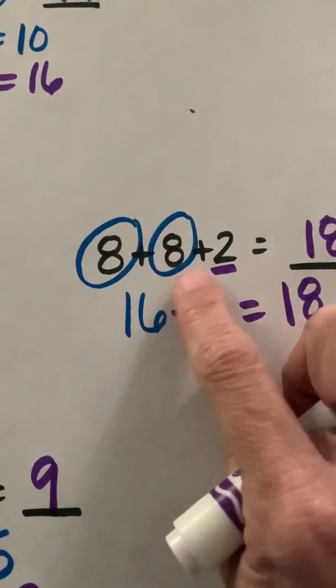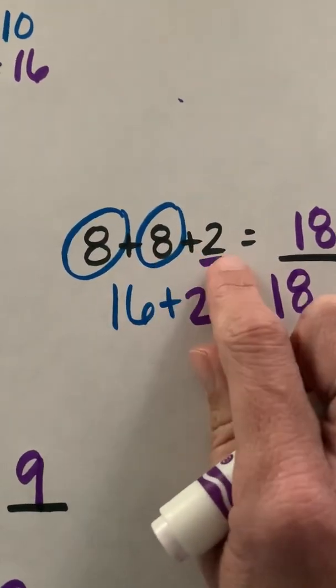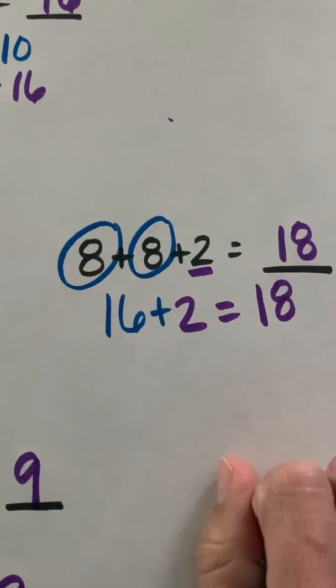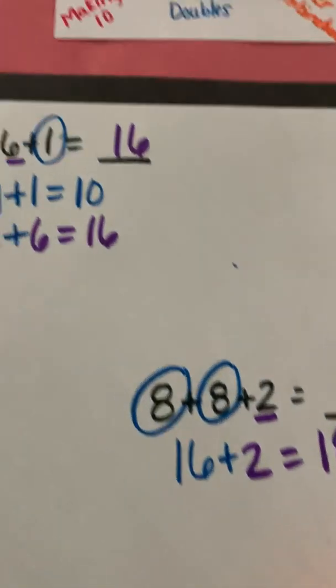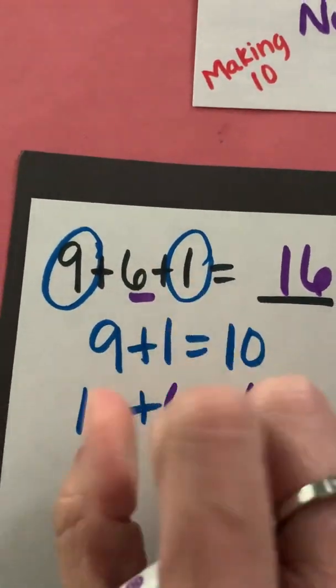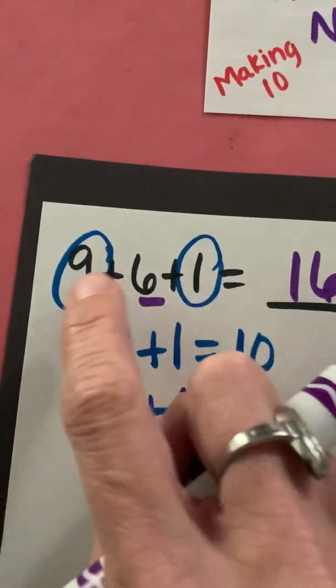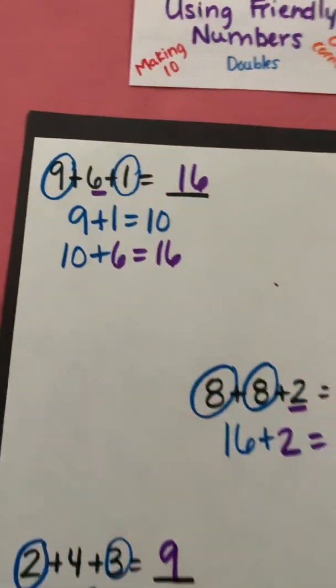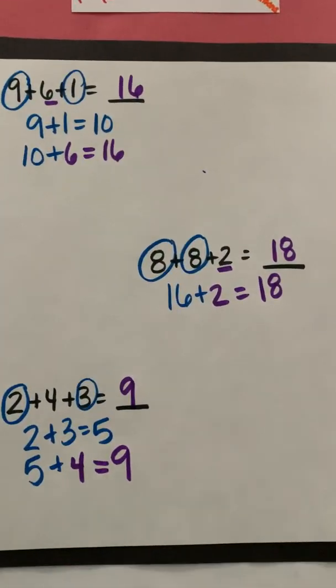I saw doubles. You may have seen making 10, and that's okay. You still will get the same sum. Some of you may have decided, I know this is 15 and I want to add on more, or I know this is 7 and I want to add on 9. So once again, think about what works best for you.